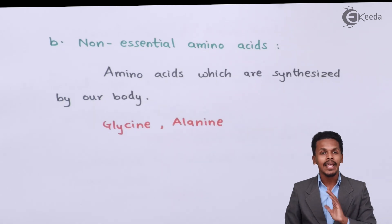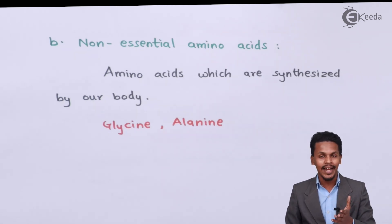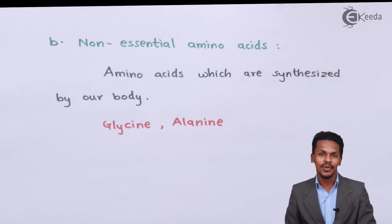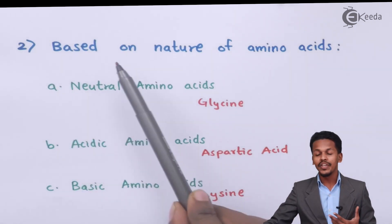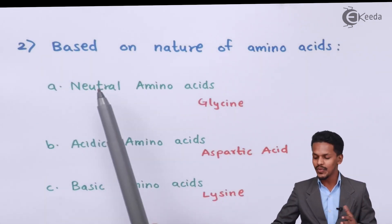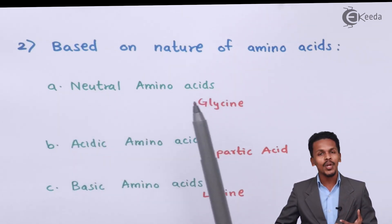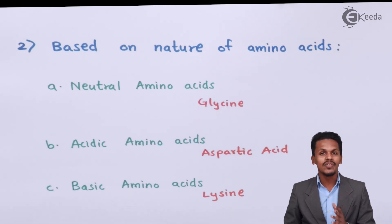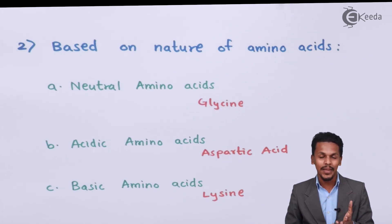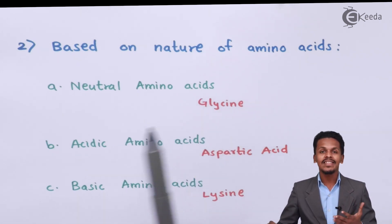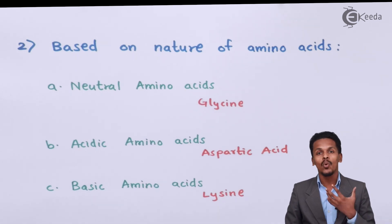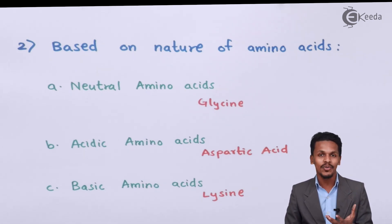This was the classification of amino acids based on function. Now let me talk about the classification based on the nature of the amino acid. Starting with the first type — neutral amino acids. Neutral amino acids are those where the total number of carboxylic groups and amino groups are found to be the same. For example, in glycine there is only one NH2 group and one COOH group, and that's the reason it is called a neutral amino acid.